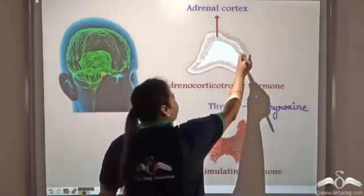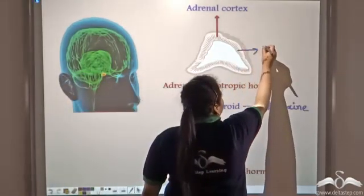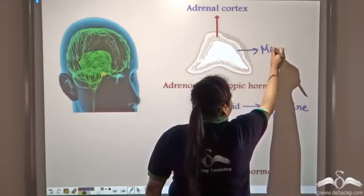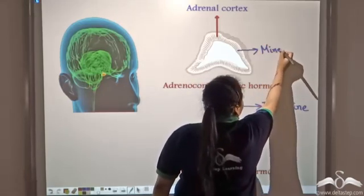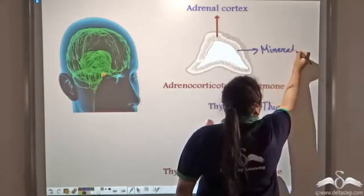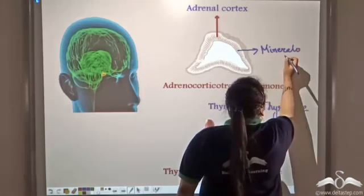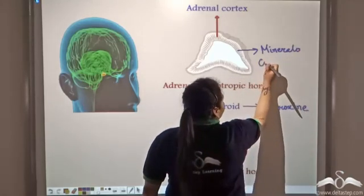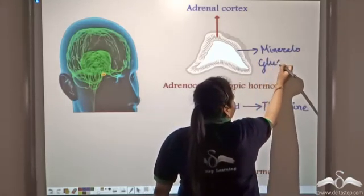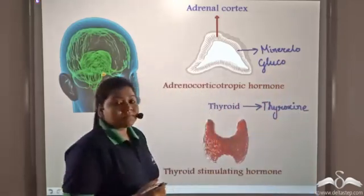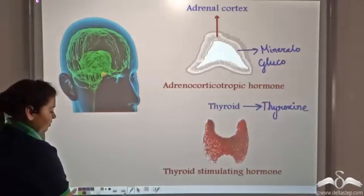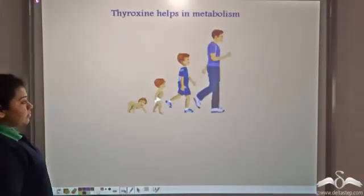Namely, the mineralocorticoid and glucocorticoid — the adrenocorticotropic hormone stimulates the adrenal cortex to secrete these cortical hormones.